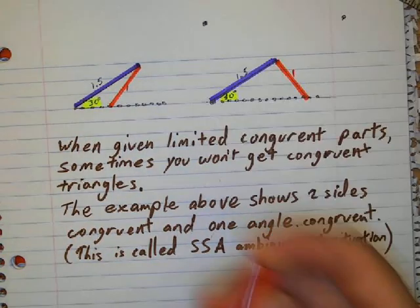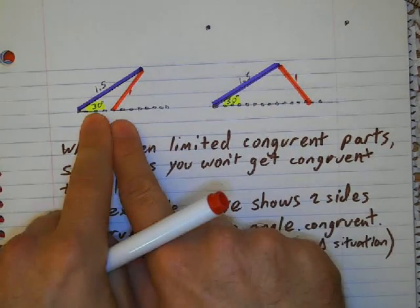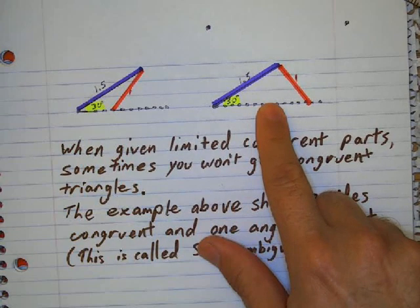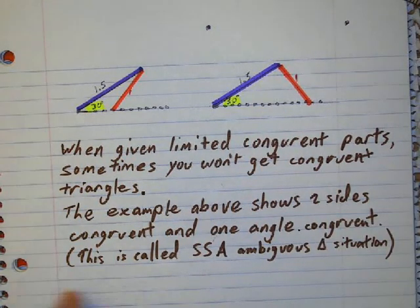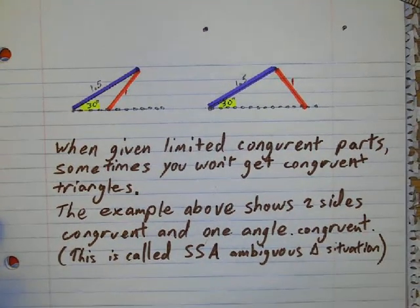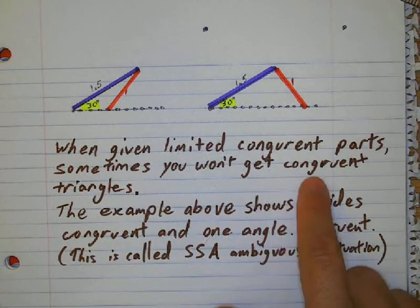So what's the difference between this triangle and this triangle? Clearly, you can just look at them and say, they're not the same. But so this is called an ambiguous triangle. And what it means is if you're given limited congruent parts information, that doesn't always mean that it's congruent.